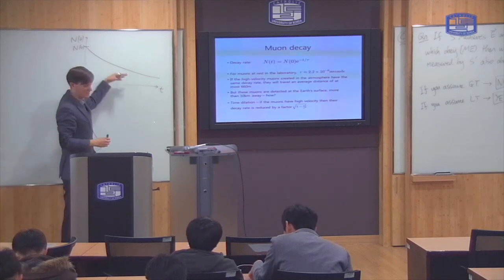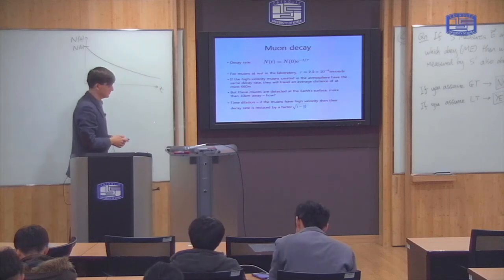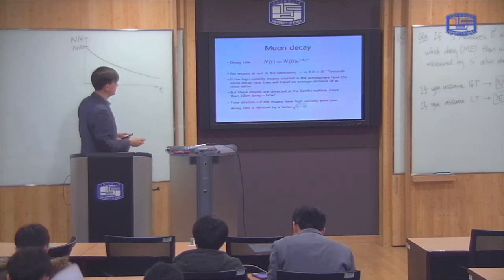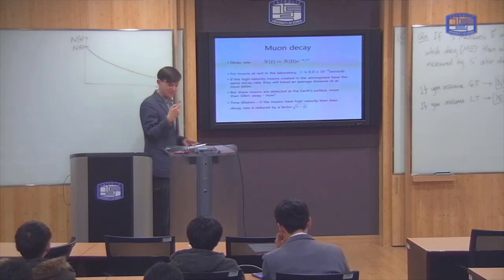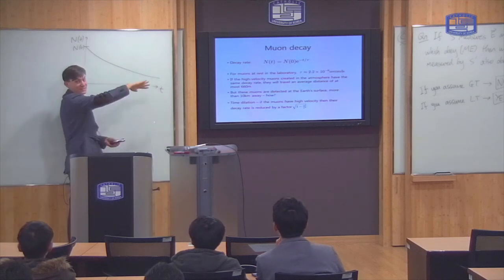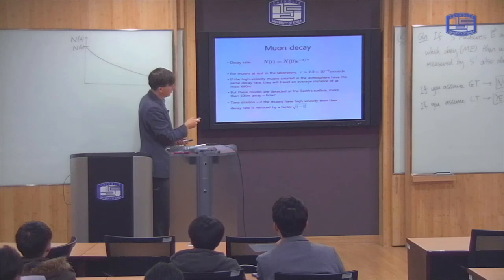More and more muons are decaying as time goes on. So, this process can be characterized by a decay rate, which tells you how fast this exponential decays. And here, for muons, this parameter tau is about 2.2 millionths of a second. And that's when they are stationary.